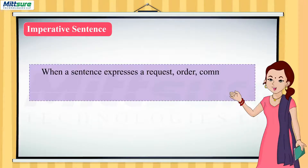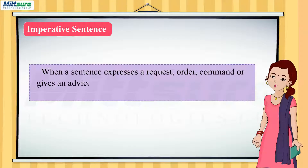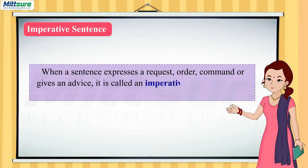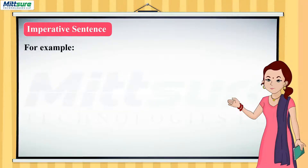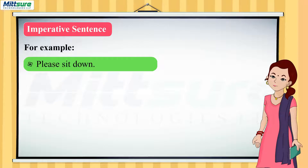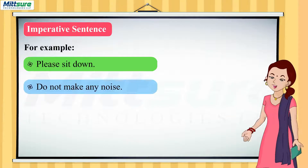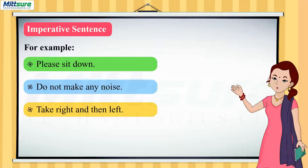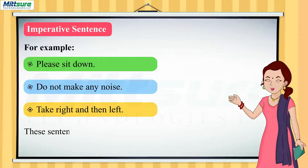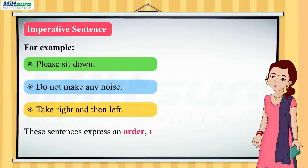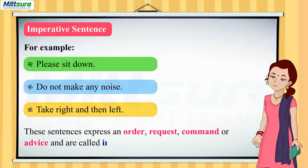Imperative sentence: when a sentence expresses a request, order, command, or gives advice, it is called an imperative sentence. It ends with a full stop. For example: please sit down. Do not make any noise. Take right and then left. These sentences express an order, request, command, or advice and are called imperative sentences.